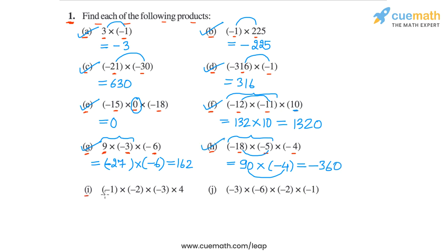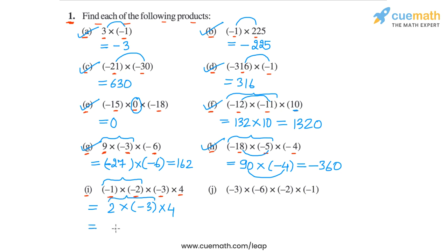Then in part I, we have minus 1 into minus 2 into minus 3 into 4. So this time we have four terms. Let's first calculate minus 1 into minus 2, which equals 2, because both integers are negative. So we have 2 into minus 3, which equals minus 6. Then minus 6 into 4: 6 into 4 is 24, so we get minus 24. That's the answer for part I.